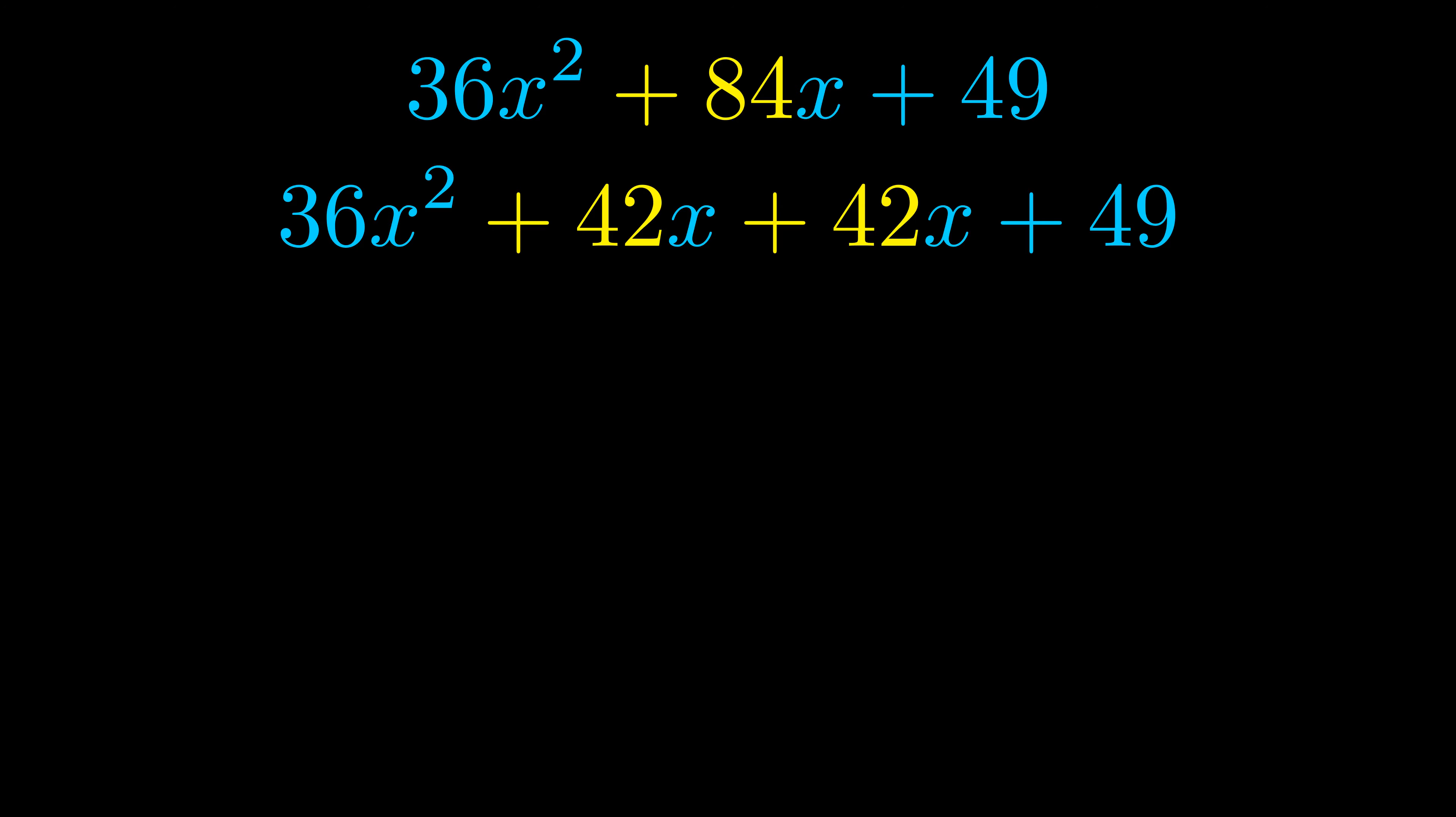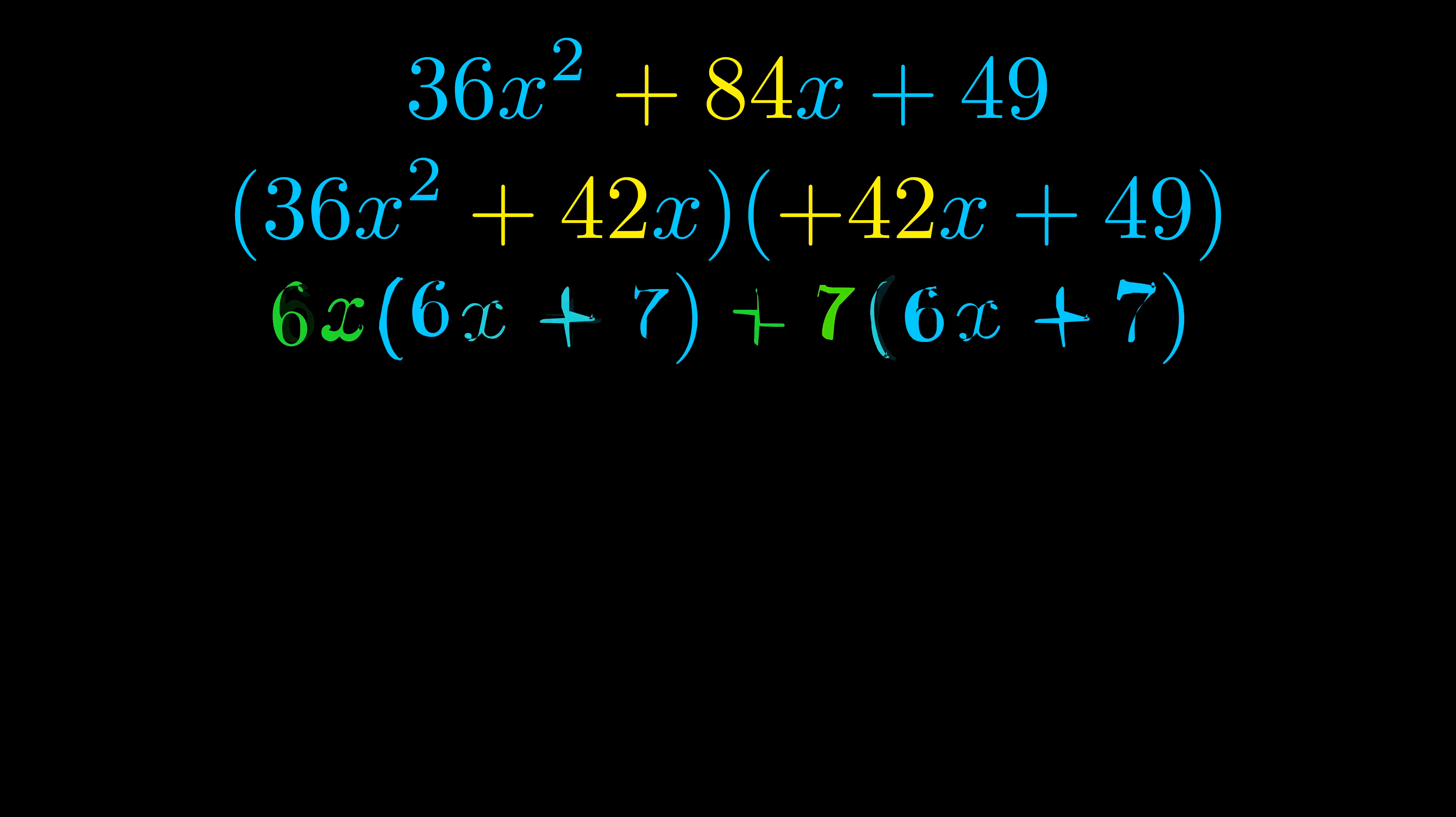Once we've done this, we go ahead and put parentheses around the first term and the last term, and we do that so we can take the greatest common factor out of both terms. We can see the greatest common factor is now outside in green. Notice also how what remains inside the parentheses is the same in both cases. The blue values are the same.